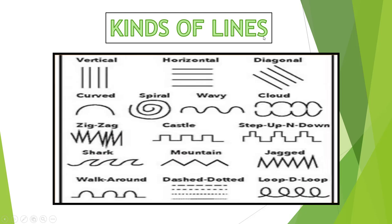These are the kinds of lines. We have vertical, horizontal, diagonal, zigzag, spiral, wavy, cloud, castle, step up and down, shark line, mountain line, jog line, walk around line, dash, dotted line, and loop-de-loop line.